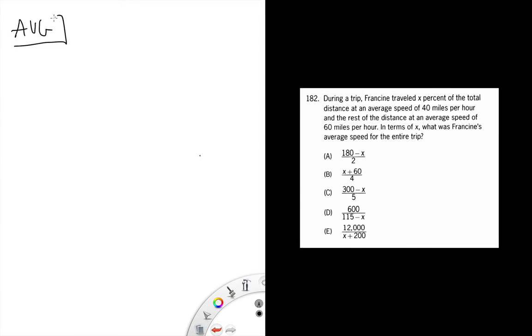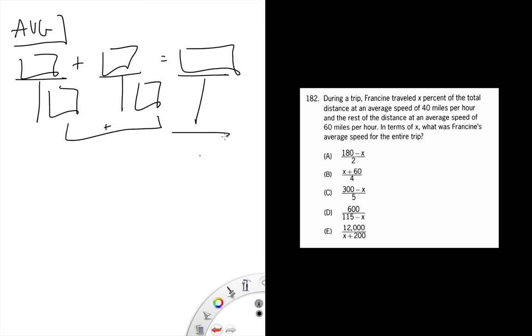This is an average rate question, so it would make sense to set up the three T's. Here we're focusing on the relationship between the two pieces of the distance equaling the total distance and the two pieces of the time equaling the total time.